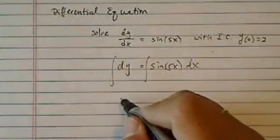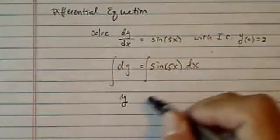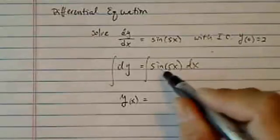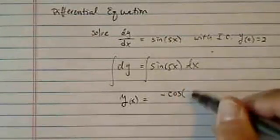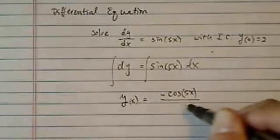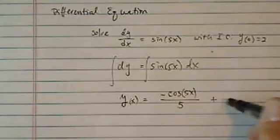Multiply dx on both sides. And then here, integration of dy, I have y as a function of x. Integration of sine x is cosine. Since we have 5x, we have to use the chain rule a little bit, and then plus a constant.